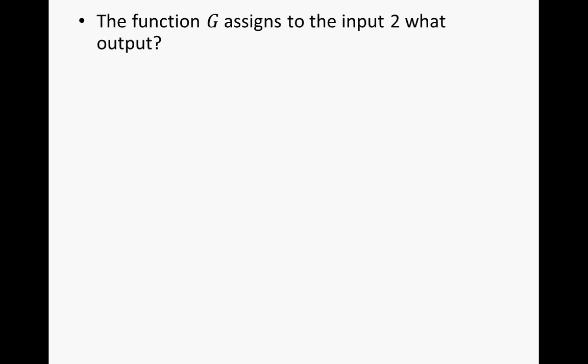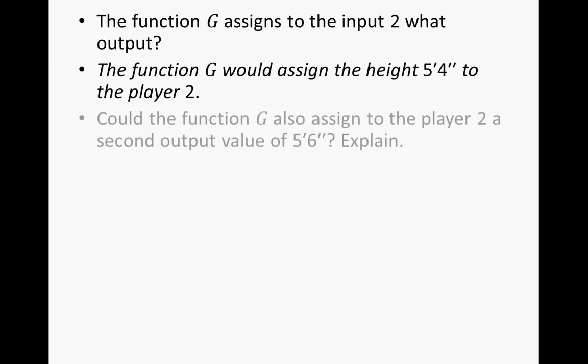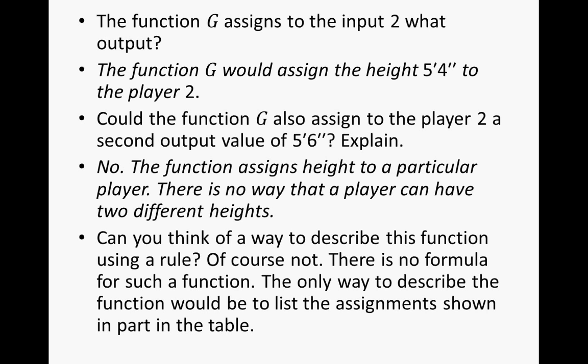The function g assigns to the input 2 what output? Well, function g would assign the height of 5 foot 4 inches to player 2. Could the function g also assign to player 2 a second output value of 5 foot 6 inches? Well, no. The function assigns height to a particular player. There is no way that a player can have two different heights. Can you think of a way to describe this function using a rule? Well, of course not. There is no formula for such a function. The only way to describe the function would be to list the assignments shown in part of the table.